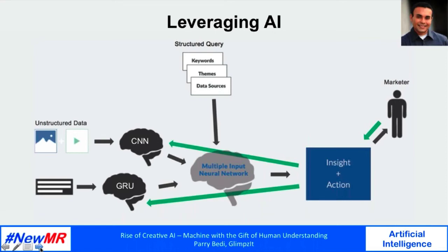Finally, we surface the insights and actions that best fit these themes from the underlying data. The marketer can look at the resulting output and choose to accept it, update it, or delete it — thereby forming a virtuous loop and helping train the system even further.